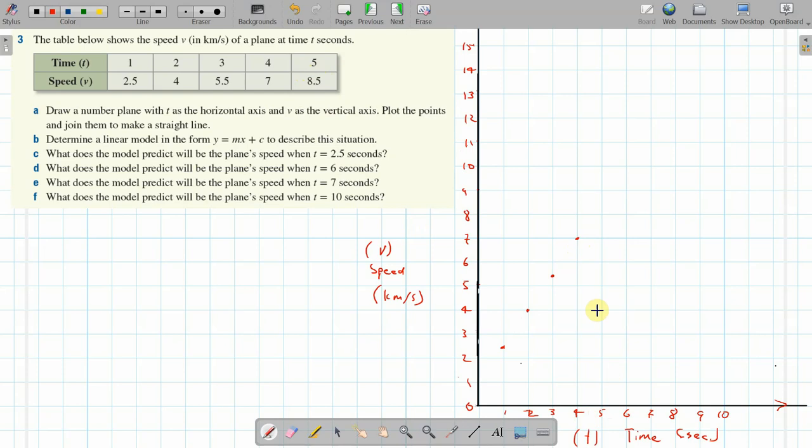A time of four and a speed of seven, and finally a time of five and a speed of 8.5. I'll keep with the red pen and join these in. In fact, I'm going to continue it back to here. Plot the points, join to make a straight line, tick.